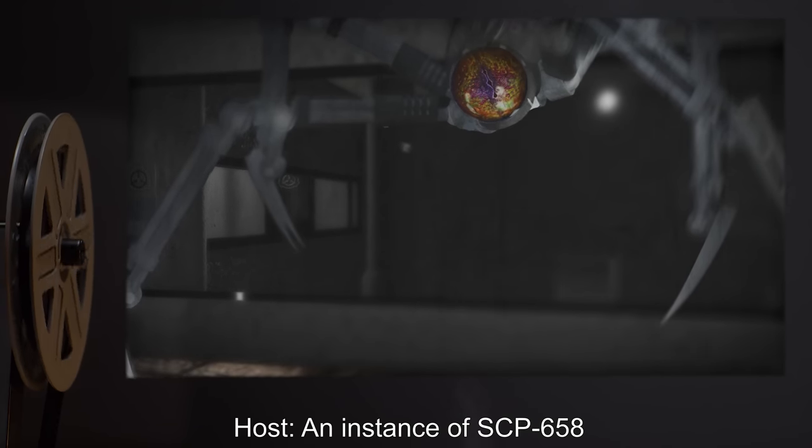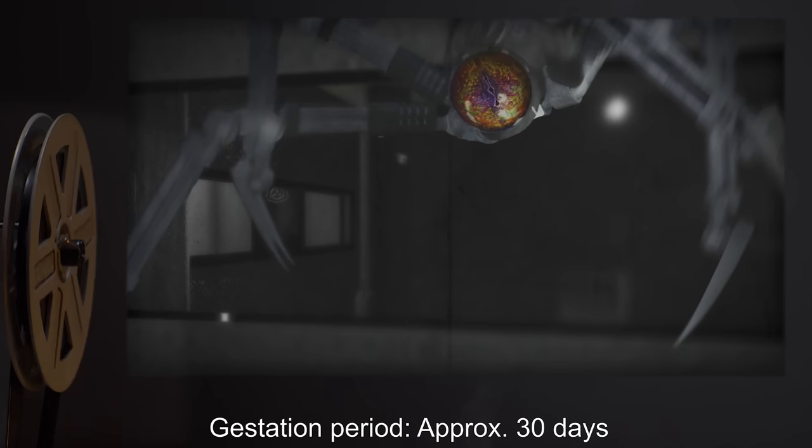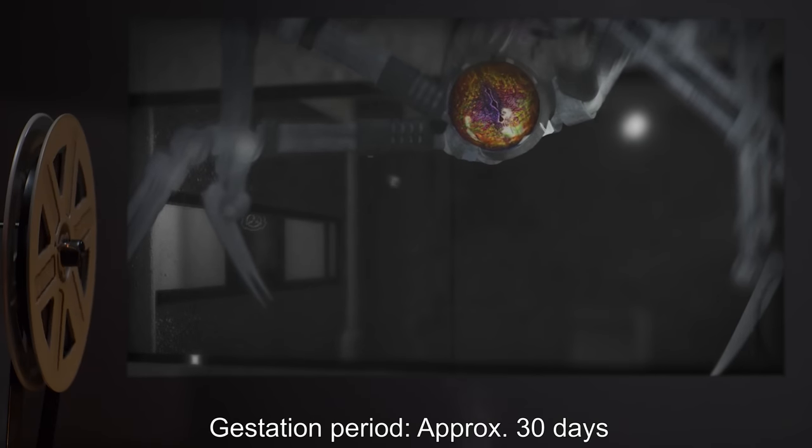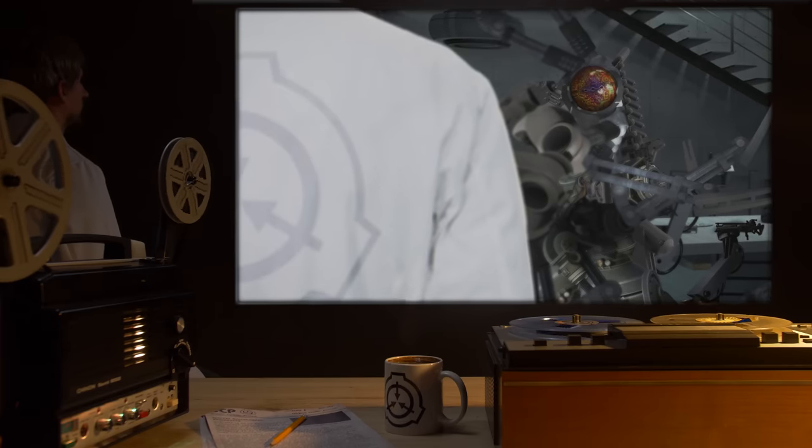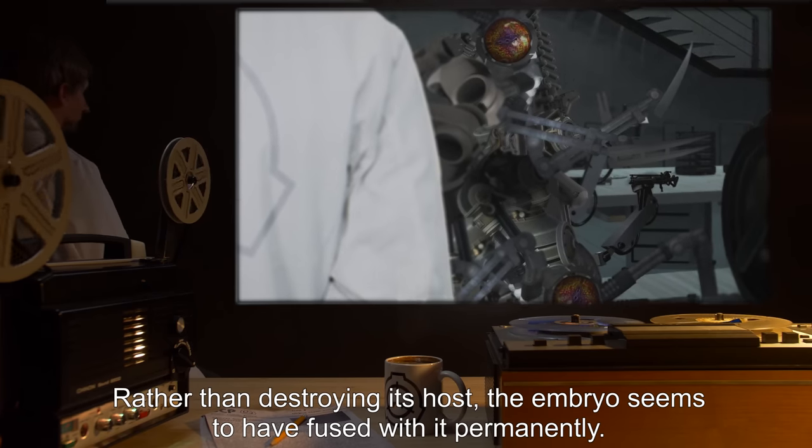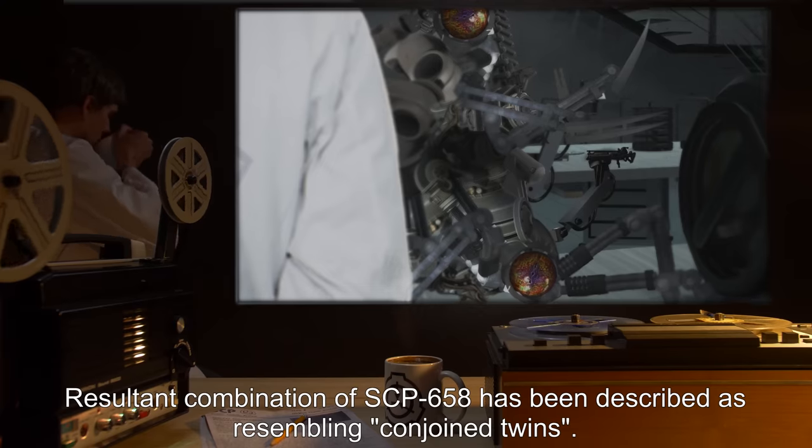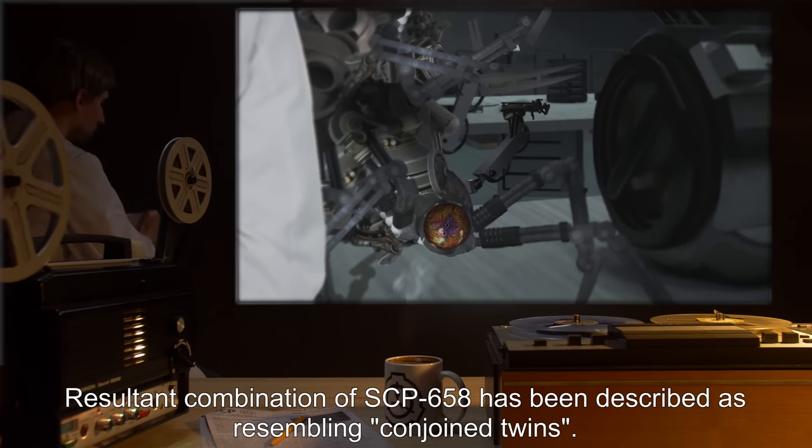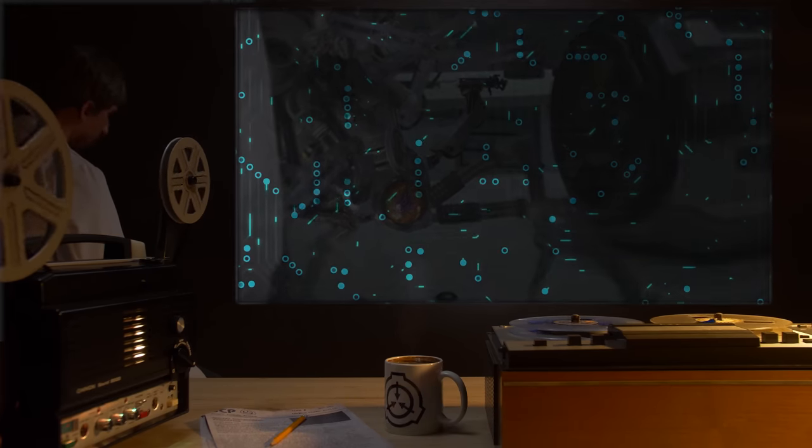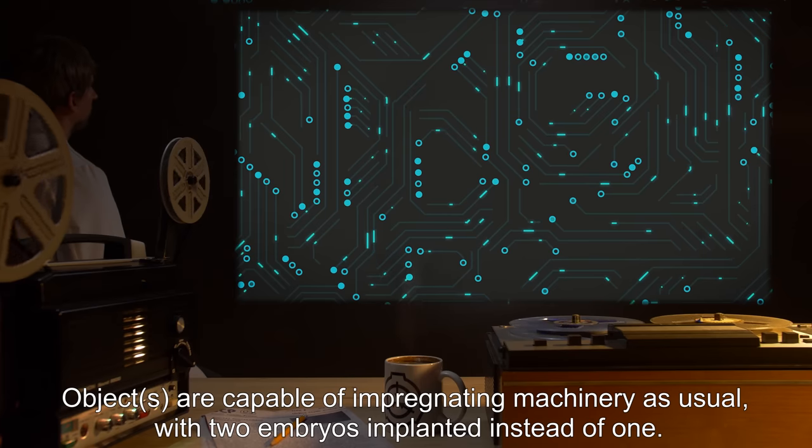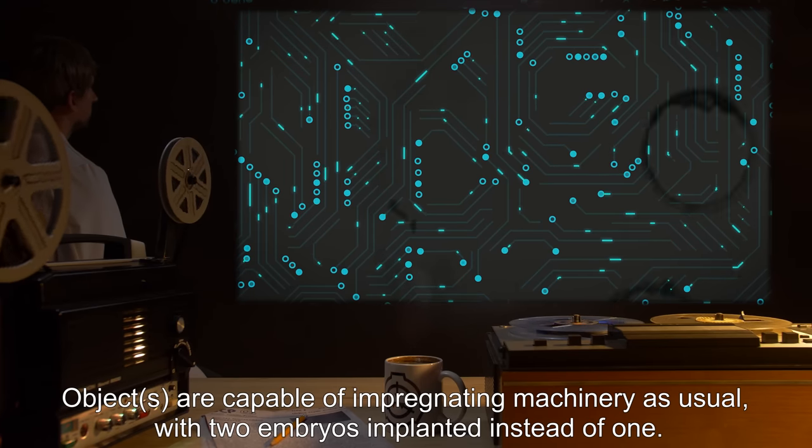Host: An instance of SCP-658. Gestation Period: Approximately 30 Days. Notes: Rather than destroying its host, the embryo seems to have fused with it permanently. Resultant combination of SCP-658 has been described as resembling conjoined twins. Objects are capable of impregnating machinery as usual, with two embryos implanted instead of one.